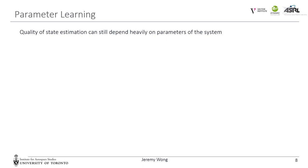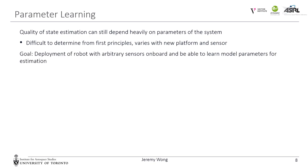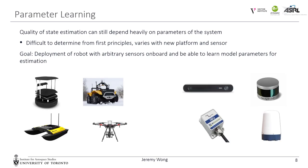Why do we care about parameter learning? Even with great state estimation tools, including ESGVI, there are often rolled-up parameters that affect the quality of the estimation. These can be difficult to determine from first principles, and they vary with each new platform and sensor. Hand-tuning them can take a lot of time if there are many unknown parameters. Our goal is to develop a learning framework that allows for the deployment of a robot with arbitrary sensors, learning the robot model parameters required for estimation from solely the sensor data — without a ground-truth system.